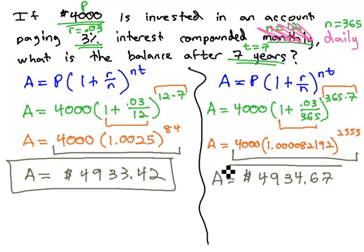And we end up with $4,934.67. What we find is when we compounded daily instead of monthly, we ended up with a little bit more money. There's about an extra $1.15 there or so. It's not a big difference, but hey, it's free money.